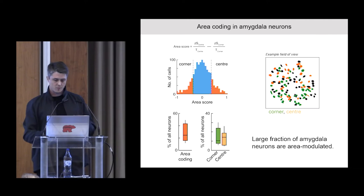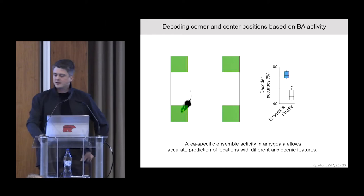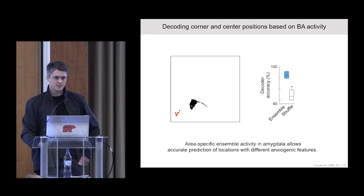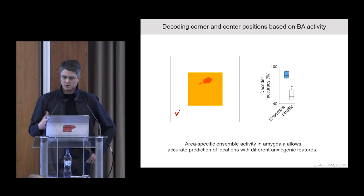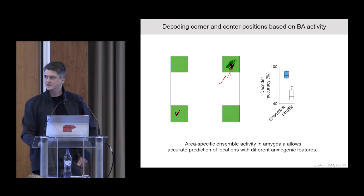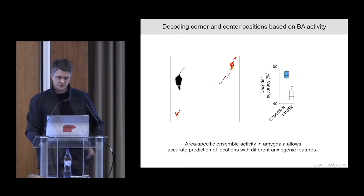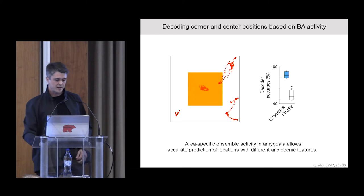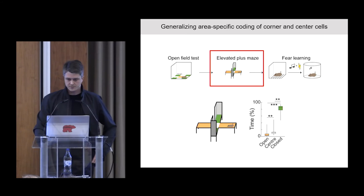Given this strong coding for corners and centers, we tested whether we can decode the animal's area location based on amygdala ensemble activity. We trained a classifier to distinguish between corner and center locations. Whenever you see the yellow square, the decoder predicts the animal is in the center of the open field; the green square predicts corner locations. Looking at decoder accuracy across animals, we find that area-specific ensemble activity in the amygdala allows accurate prediction of locations with different anxiogenic features.